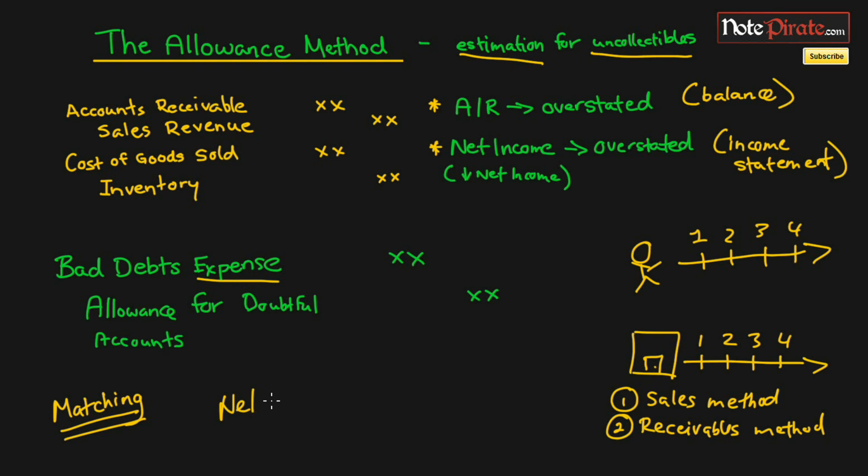We also are going to have a net realizable value for accounts receivables by having this contra account known as allowance for doubtful accounts, because that's going to bring our accounts receivables to its net realizable value. Having this entry is going to bring our accounts receivables and net income to their rightful values.